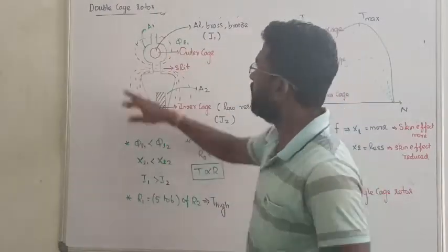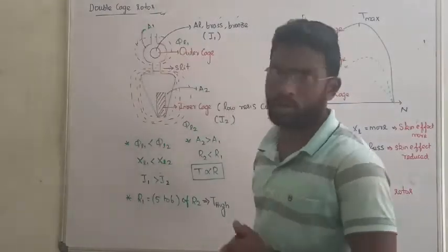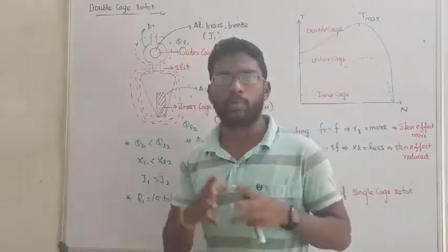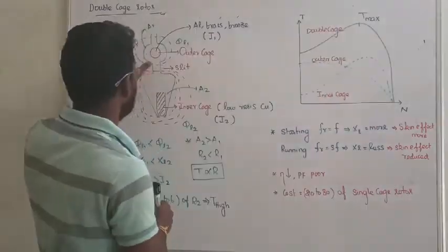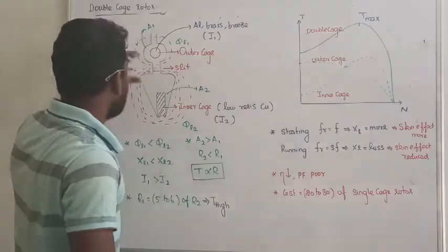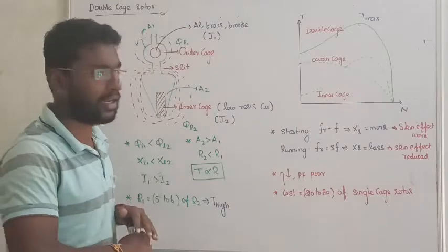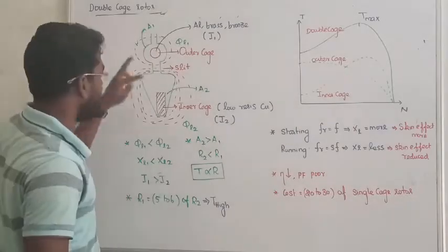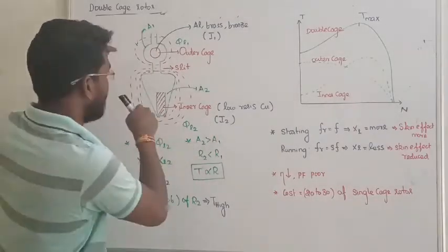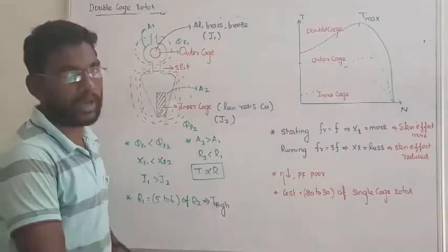See, that is called a double cage rotor. Usually the rotor is single cage, one cage only, but now I am breaking it into two. And since they are connected in parallel, actually they look like series but they are parallel, so this connection is called parallel connection.